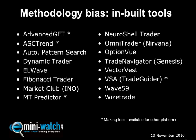I've listed here a couple of dozen methodology-biased platforms. We've got Advanced Get, which is a Gann/Elliott Wave platform. ASC Trend, which is a trend-following trailing stop product. Automatic Pattern Search, which does pattern recognition. Dynamic Trader — another Fibonacci/Elliott Wave product. L-Wave for Elliott Wave. Fibonacci Trader for Fibonacci, and so on. So if you follow a particular methodology or guru, your choice of charting software will be more limited, and you need to find the best package that caters for that methodology.